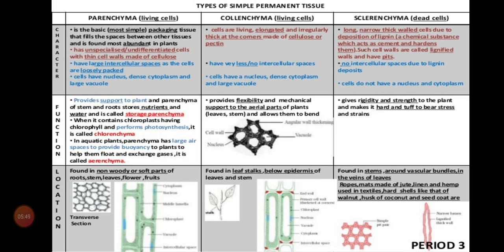We will look at the first three columns of this flow chart — you will understand every concept clearly. If you are thorough with this tabular column you do not need to learn anything extra from your NCERT book; everything is given here. Please draw a column in your notebook and write all those points, and you can learn easily. If you compare and contrast, you can keep it in your mind very clearly. Next we will start with parenchyma.